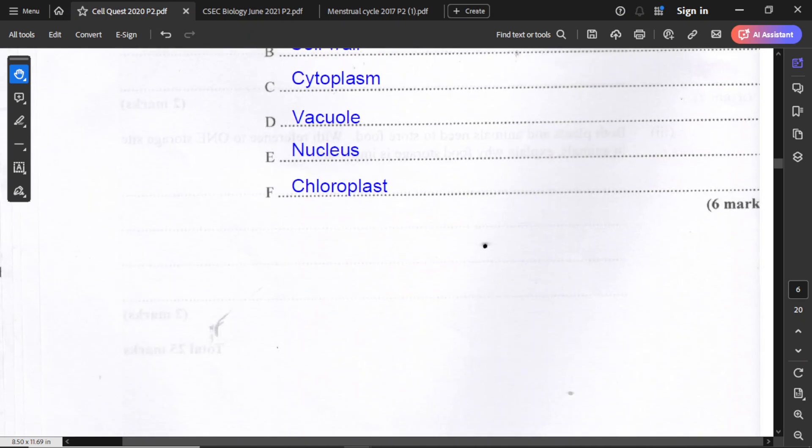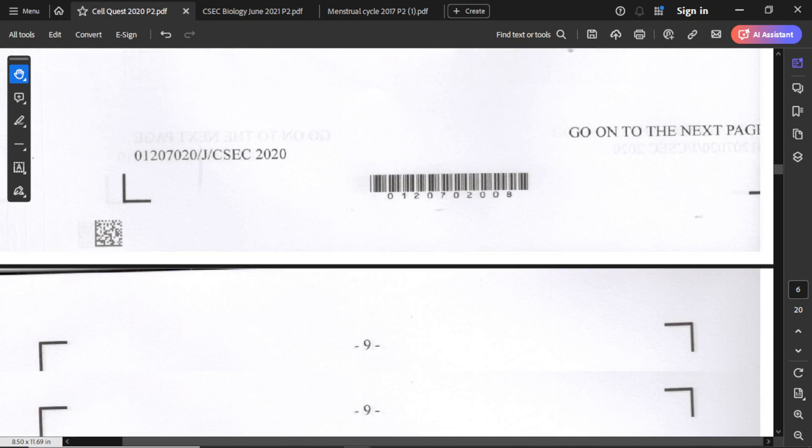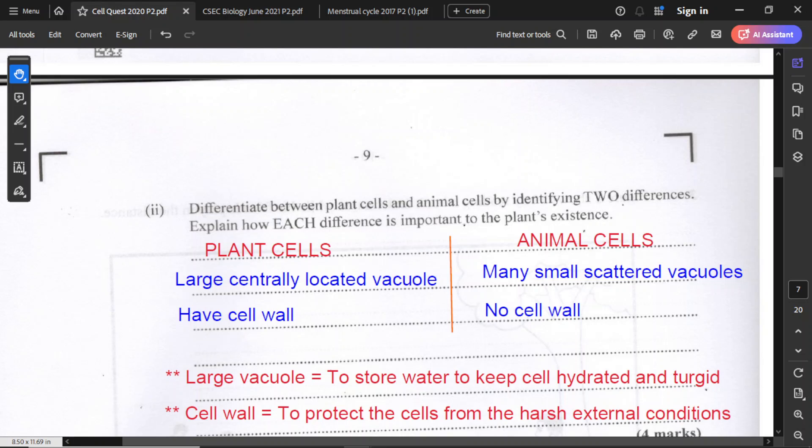For the next part of the question, it asks us to differentiate between plant cells and animal cells by identifying two differences, and explain how each difference is important to the plant's existence. When you're doing questions in terms of differences or similarities, you can simply make a chart, and you want your answers to be very precise. You don't need to write in long sentences.